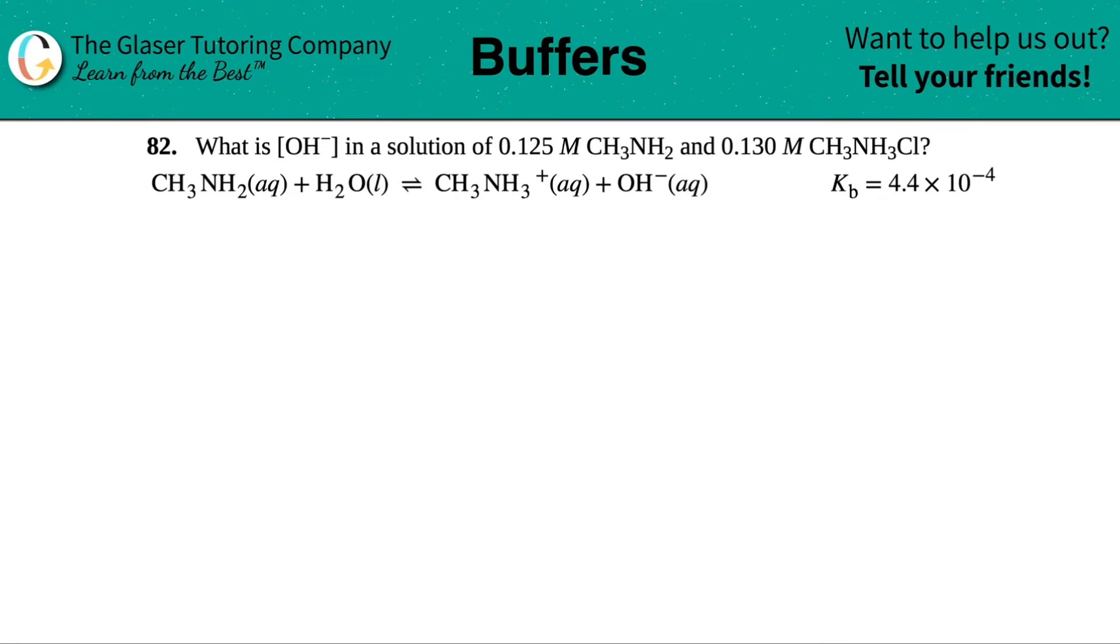Number 82. What is the hydroxide ion concentration (OH-) in a solution of 0.125 molar CH3NH2 and 0.130 molar CH3NH3Cl? They give us a balanced equation and a Kb value of 4.4 times 10 to the negative 4.